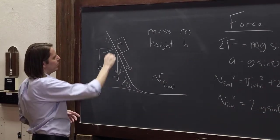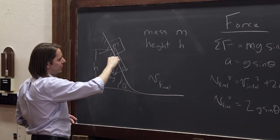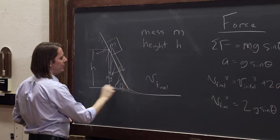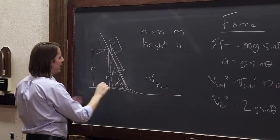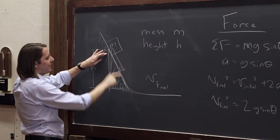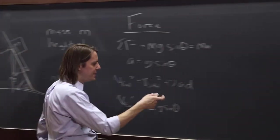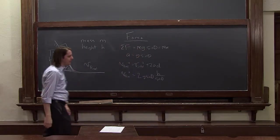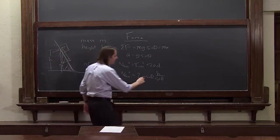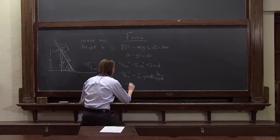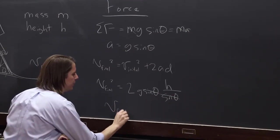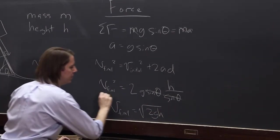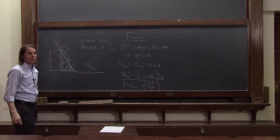Equals 2 times the acceleration is g sine theta times the distance. So how far is it going to go? Well, it's going to go actually all the way down the hypotenuse of this right triangle. So I'm not drawing these real nice because this is fall semester stuff. It's going to go down this hypotenuse. And if this is h, then that is h over sine theta. So d equals h over sine theta. So the sine thetas cancel. And what you end up with is that the final velocity, after you take the square root, is the square root of 2gh.